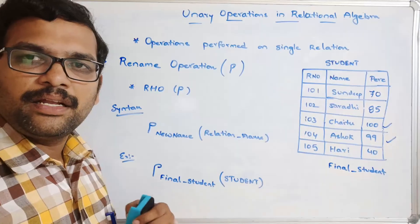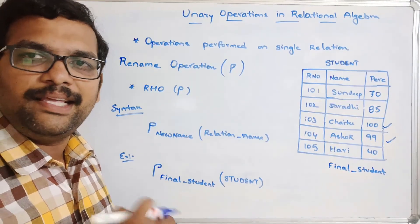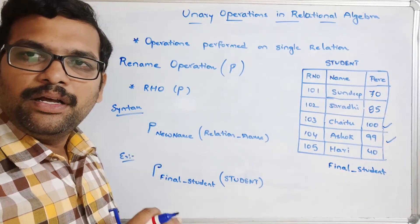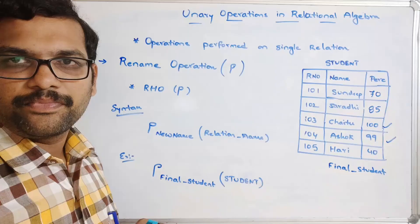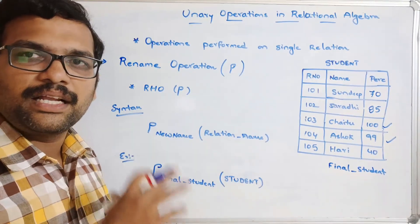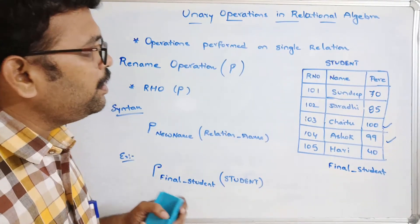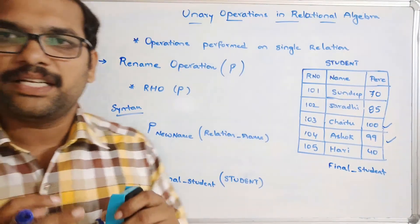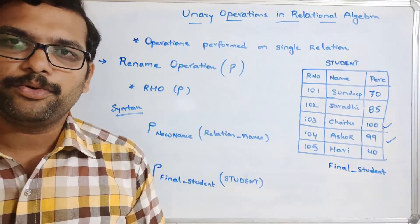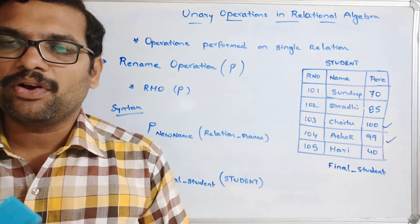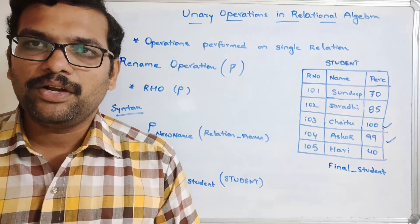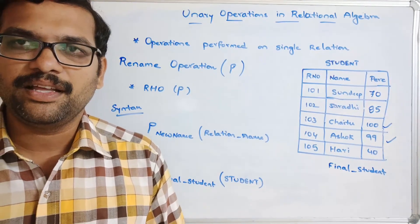So these are the unary operations: selection, projection, and rename — all performed on a single relation. In the next session we'll cover the set theory operations in relational algebra: intersection, union, Cartesian product, and set difference. If you have any doubts, post them in the comment section. Like, share, and subscribe to our channel. Thanks for watching!